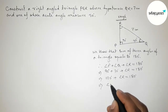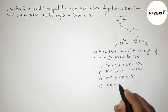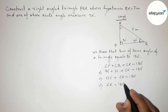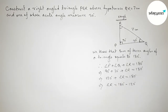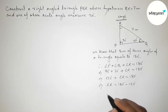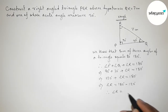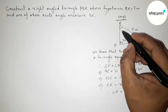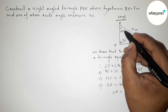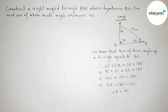This implies angle R equals 180 degrees minus 120 degrees. Therefore, angle R equals 60 degrees.